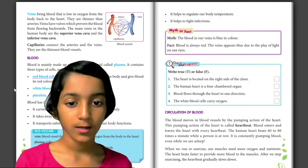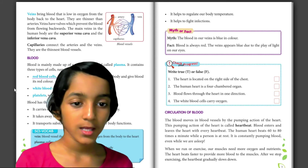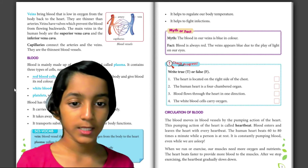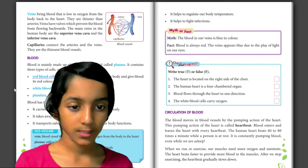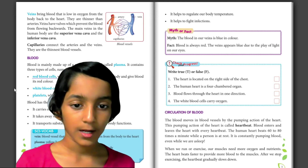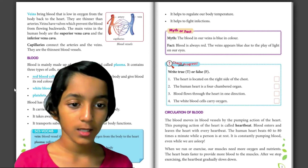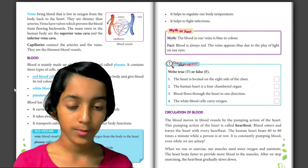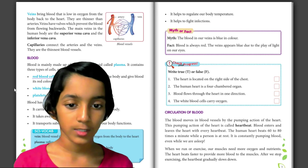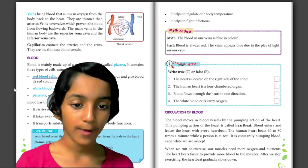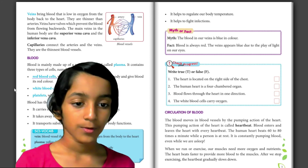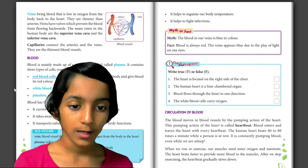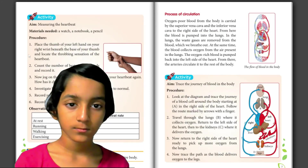Circulation of blood. The blood moves in blood vessels by the pumping action of the heart. This pumping action of the heart is called heartbeat. Blood enters and leaves the heart with every heartbeat. The human heart beats 60 to 80 times a minute while a person is at rest. It is constantly pumping blood even while we are asleep. When we run or exercise, our muscles need more oxygen and nutrients, so the heart beats faster. After we stop exercising, the heartbeat gradually slows down.